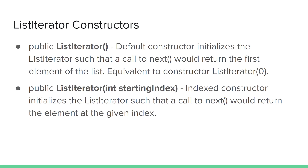Using index 0 would be equivalent to calling the default constructor — the ListIterator would be queued up in front of the first element, the element at index 0. Using the size of the list as the starting index would queue up the ListIterator after the last element, which could be used if you intended to navigate through the list in reverse order. You can also use any index within the bounds of 0 to the size of the list.